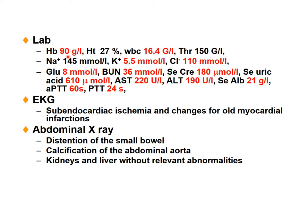Lab values show decreased hemoglobin and hematocrit, so anemia. White blood cell count elevated — possibly due to inflammatory reaction. Potassium elevated, chloride elevated, glucose elevated. Blood urea nitrogen elevated, creatinine elevated, uric acid elevated. AST and ALT elevated — liver function enzymes elevated. Albumin low — possibly due to cirrhosis. APT time and PT time elevated — suggesting coagulation factor abnormalities. ECG shows subendocardial ischemia and changes from old myocardial MI.